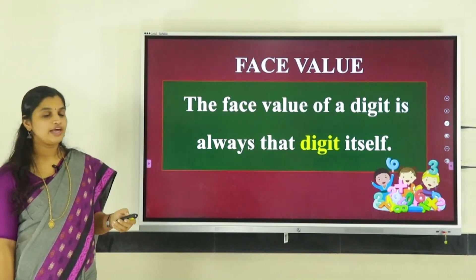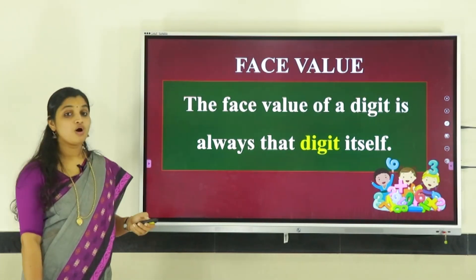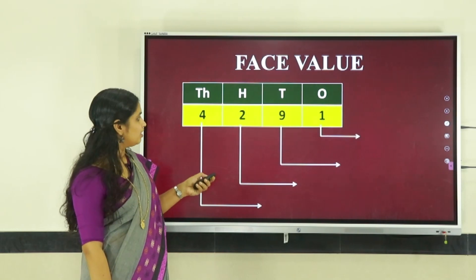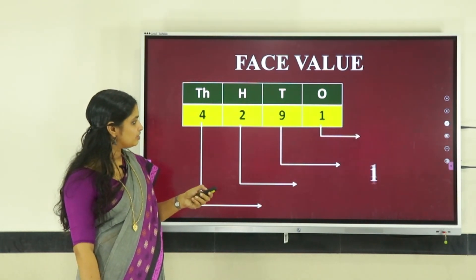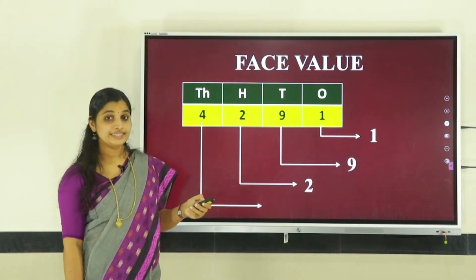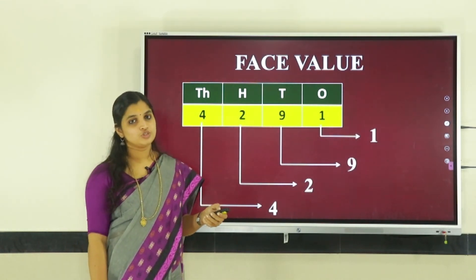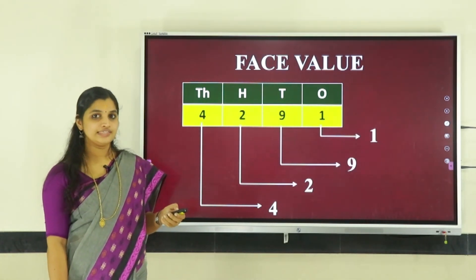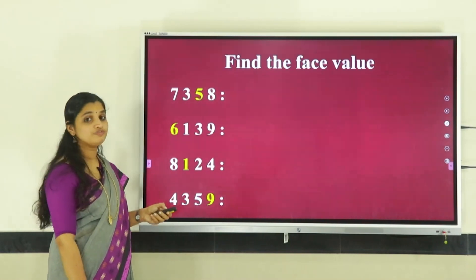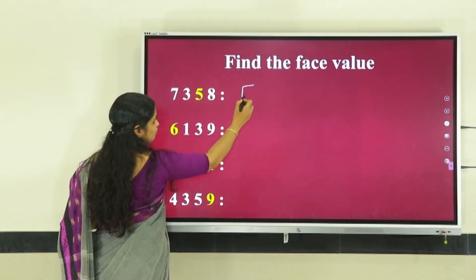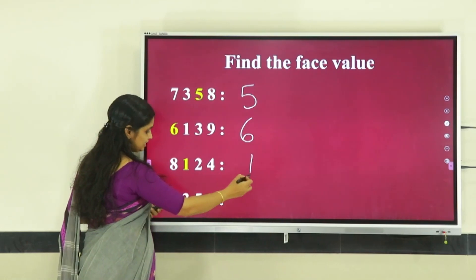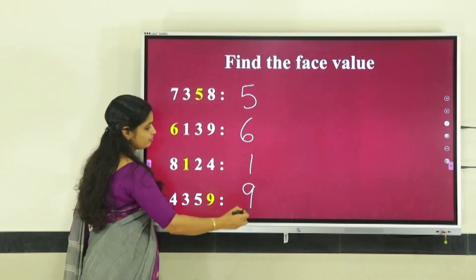Next is face value. The face value of a digit is always the digit itself. For example, the face value of one is one, nine is nine, two is two, and four is four. Let us find the face value of the digits: five is five itself, six is six itself, one is one itself, and nine is nine itself.